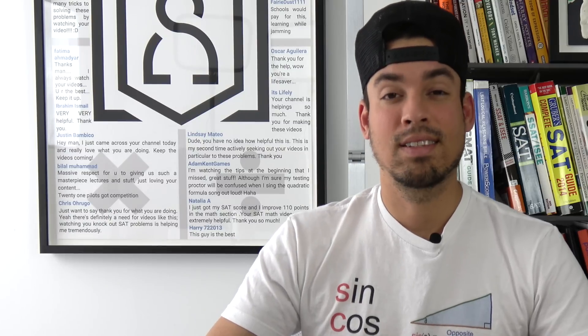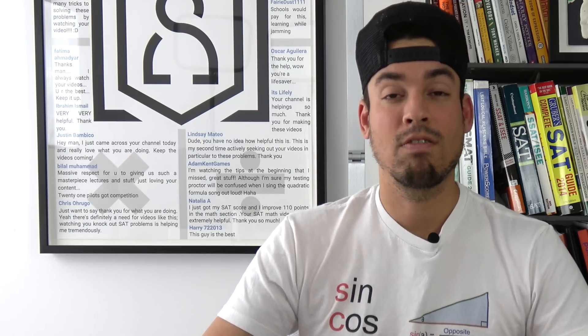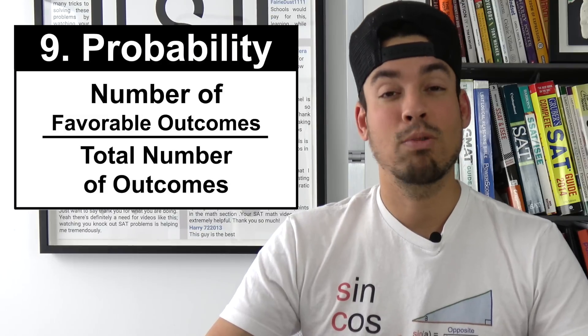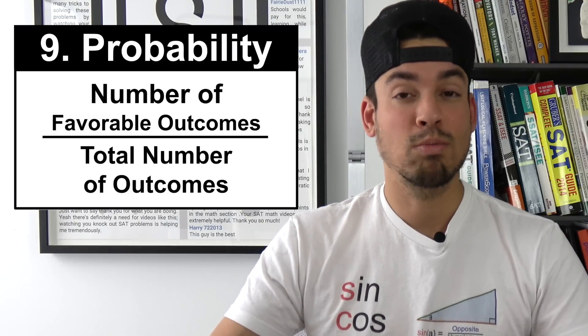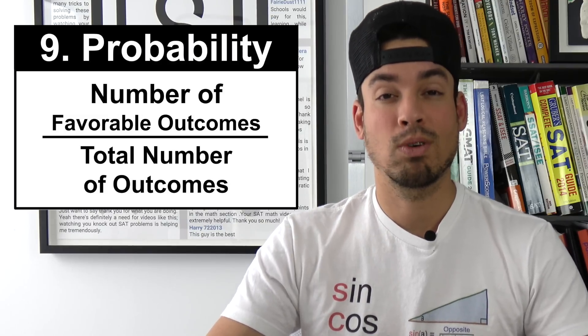Next on the list is the simple but very important formula of probability which is the number of favorable outcomes or aka the number of ways to win over the total number of outcomes.